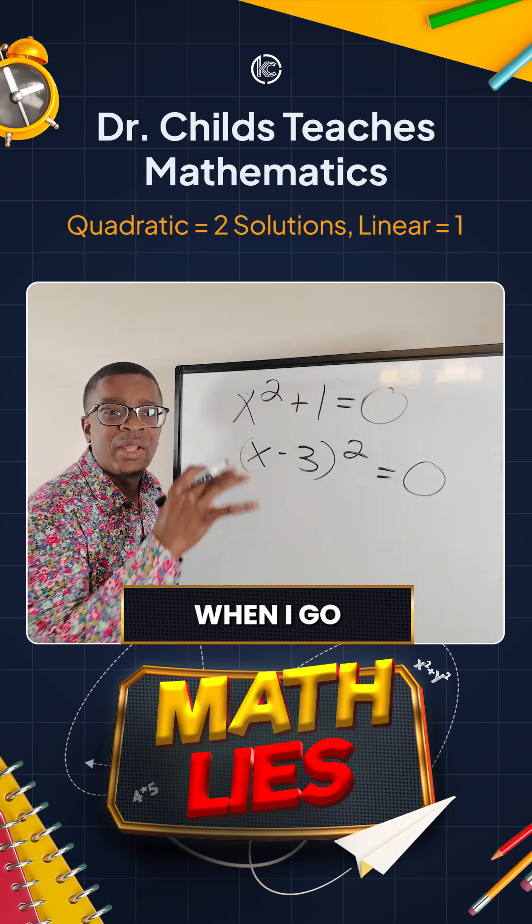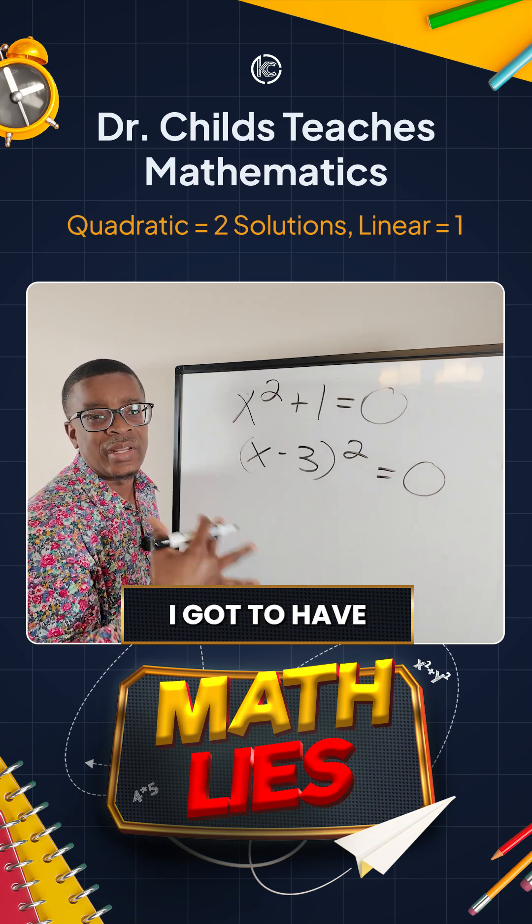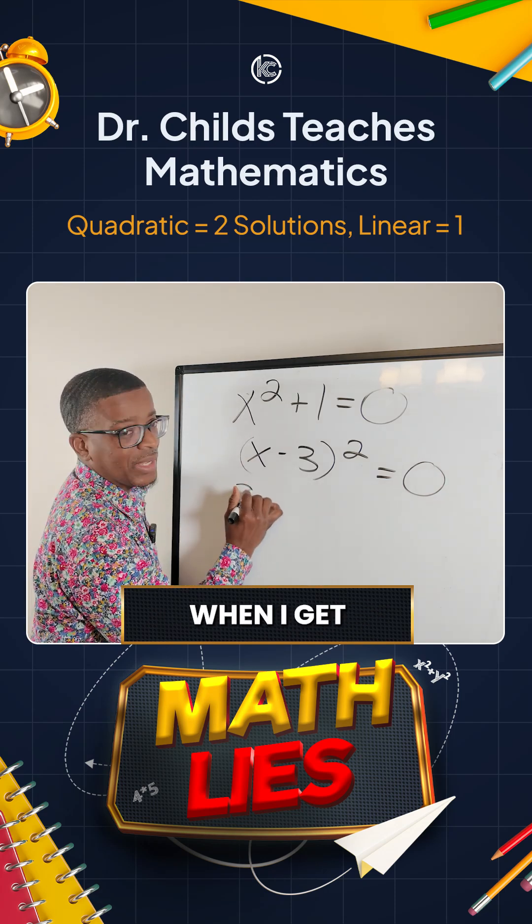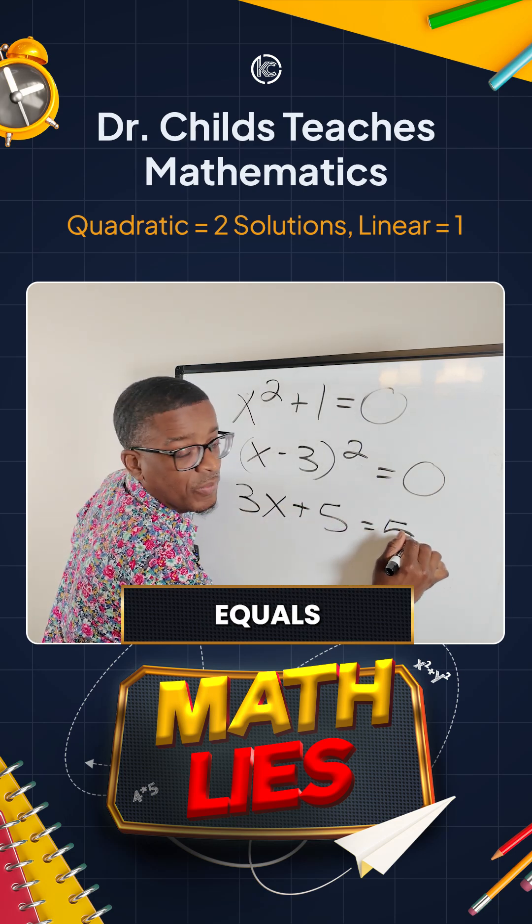But here's the thing: what happens when I go through this problem-solving process and I just think I've got to have either two solutions, I've got to have one solution? What happens when I get 3x plus 5 equals 3x?